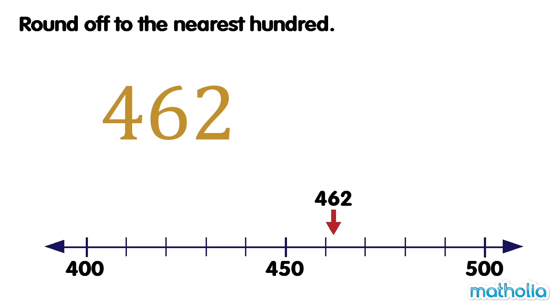Round off to the nearest hundred. Let's round off 462 to the nearest hundred. When rounding to the nearest hundred, we look at the digit in the tens place.